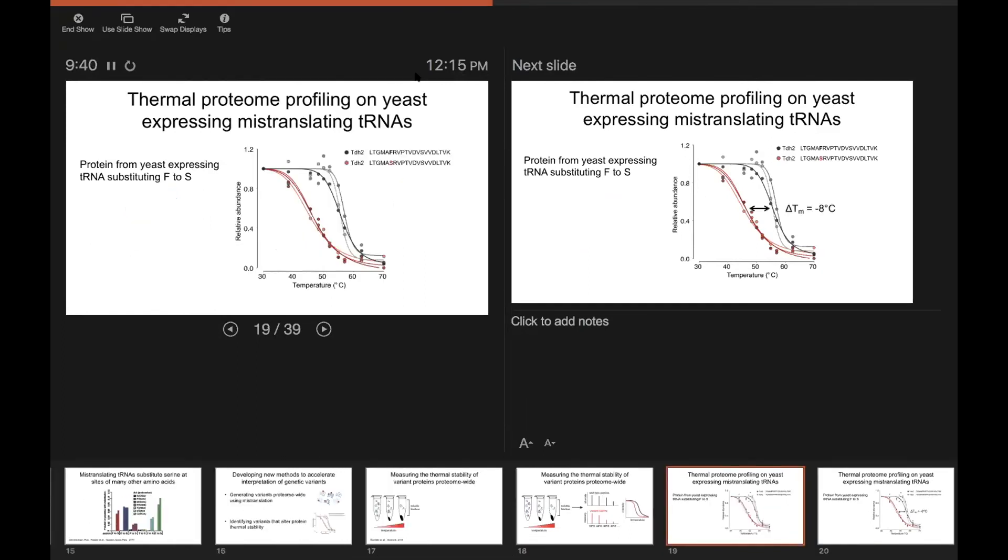So here's an example of how the real data actually looks. This is from a TPP experiment of three replicates on protein from yeast expressing a tRNA that substitutes phenylalanine at serine sites. And I'm showing one example peptide here from the protein TDH2.